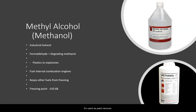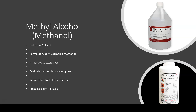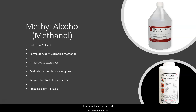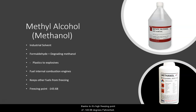For example, it's used in paint removers, and photocopier developers also use methyl alcohol. People with experience and know-how also use methanol to make other chemicals. Formaldehyde forms as a byproduct of degrading methanol, and some industries use this byproduct to make everything from plastics to explosives. It also works to fuel internal combustion engines and keeps other fuels from freezing, such as antifreeze in a car, thanks to its high freezing point of negative 143.68 degrees Fahrenheit.